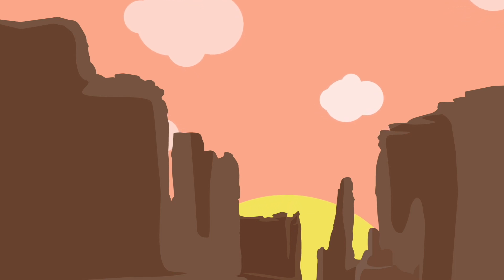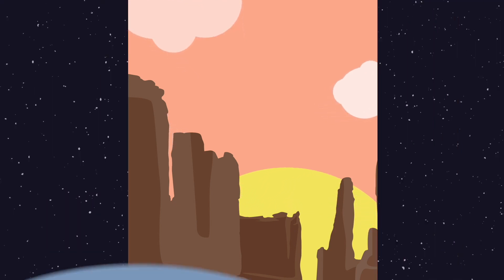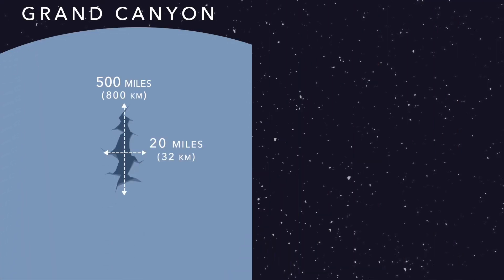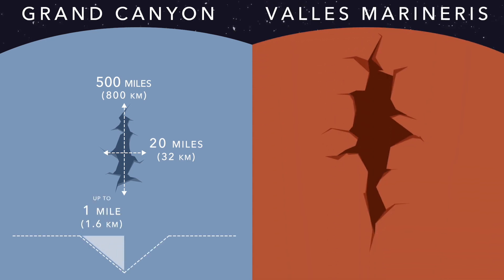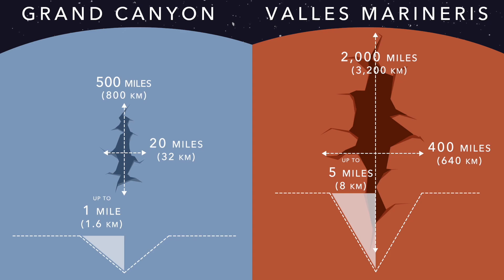And we all know about Earth's legendary Grand Canyon, which is an impressive 500 miles long, 20 miles across, and up to a mile deep. But Mars' canyon system, Valles Marineris, is an incredible 2,000 miles long, 400 miles across, and up to five miles deep.